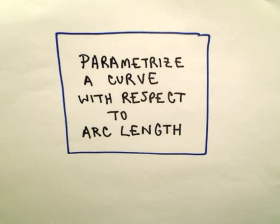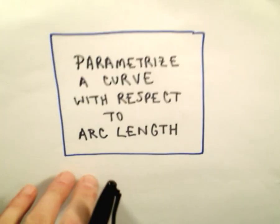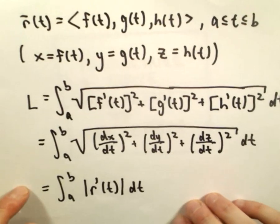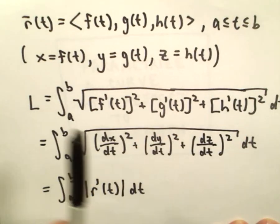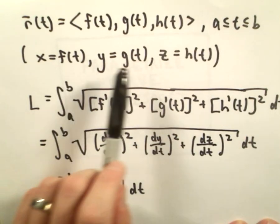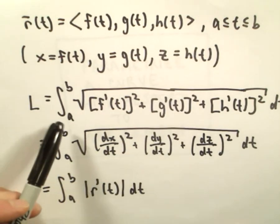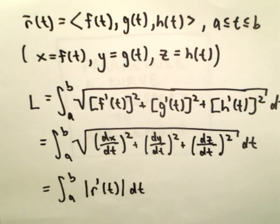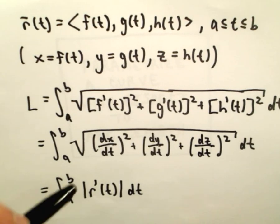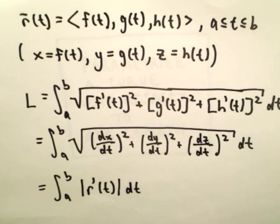In this video we're going to do an example of parametrizing a curve with respect to arc length. The formula for arc length: if you have a vector function r of t with components f(t), g(t), h(t), where t is between a and b, you take the derivative of the components, square each of those, add them together, and take the square root.